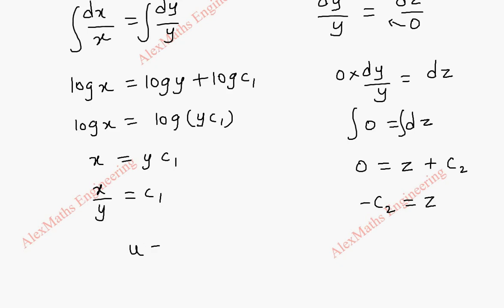So this is u which is x by y, and this is v which is z. Constant can be positive or negative or any multiples also. So we just take v as z.